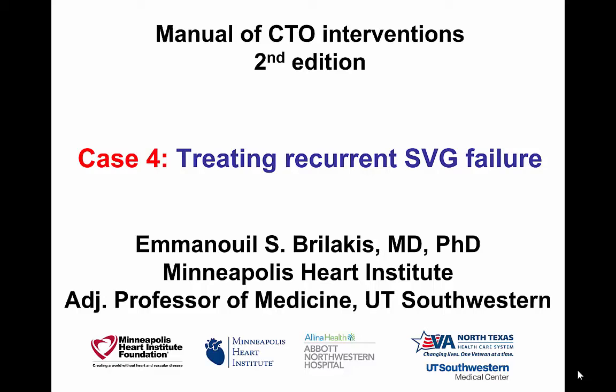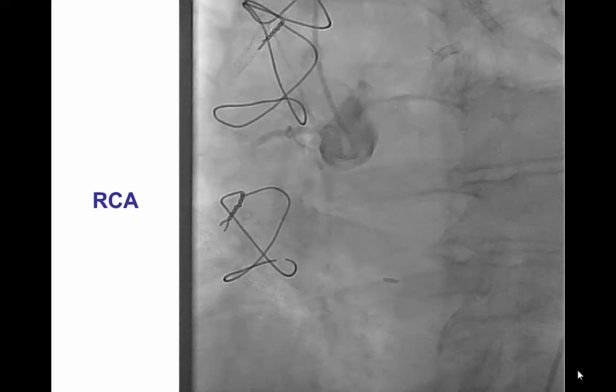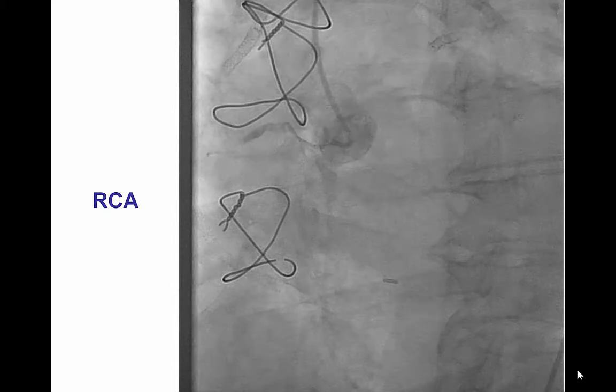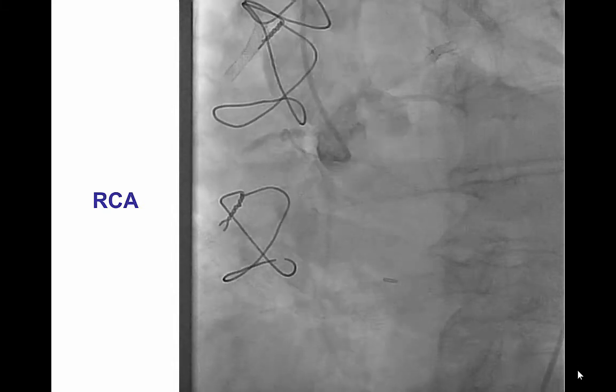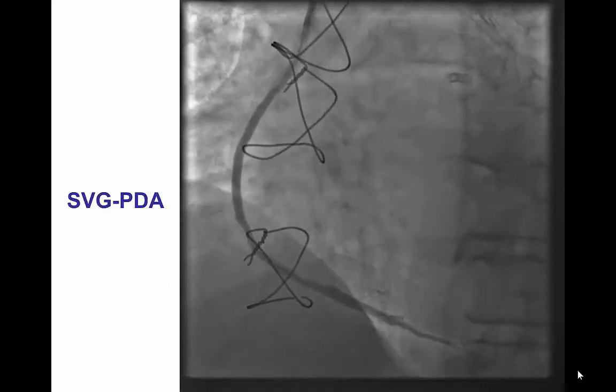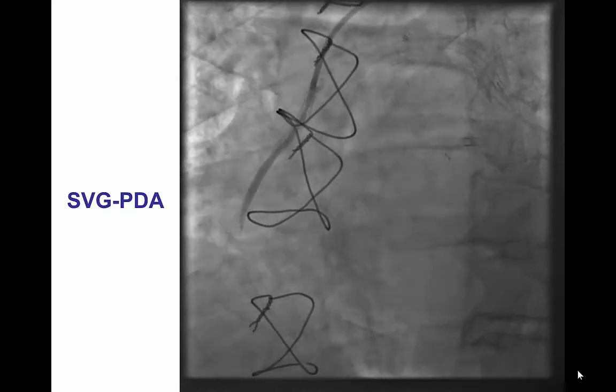Hi, this is Manos Brilakis from the Minneapolis Heart Institute, presenting case 4 for the second edition of the Manual of CTO Interventions. This is a case of recurrent saphenous vein graft failure that was successfully treated with re-canalization of the native coronary artery. The patient had previous coronary bypass graft surgery with a CTO of the mid-right coronary artery and presented with recurrent failure of a saphenous vein graft to the PDA.